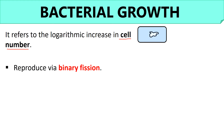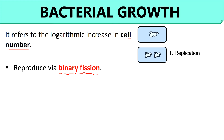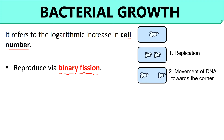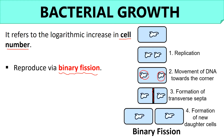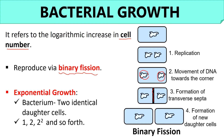Bacteria commonly reproduce through binary fission. In this process, a single bacterial cell will first replicate its DNA, then the DNA moves towards the corner of the cell, and eventually a formation of transverse septa occurs that breaks the cell into two identical daughter cells. Therefore, the growth of bacteria is exponential or logarithmic — one cell multiplies to give two cells, then two cells multiply to give four cells, and so on.